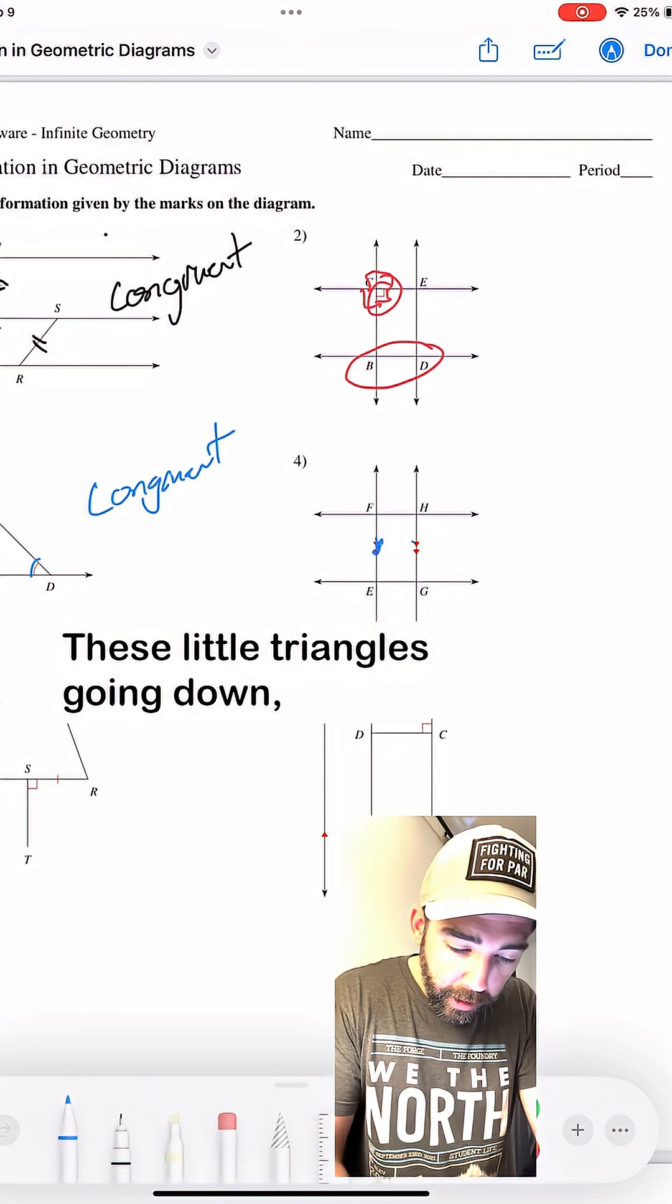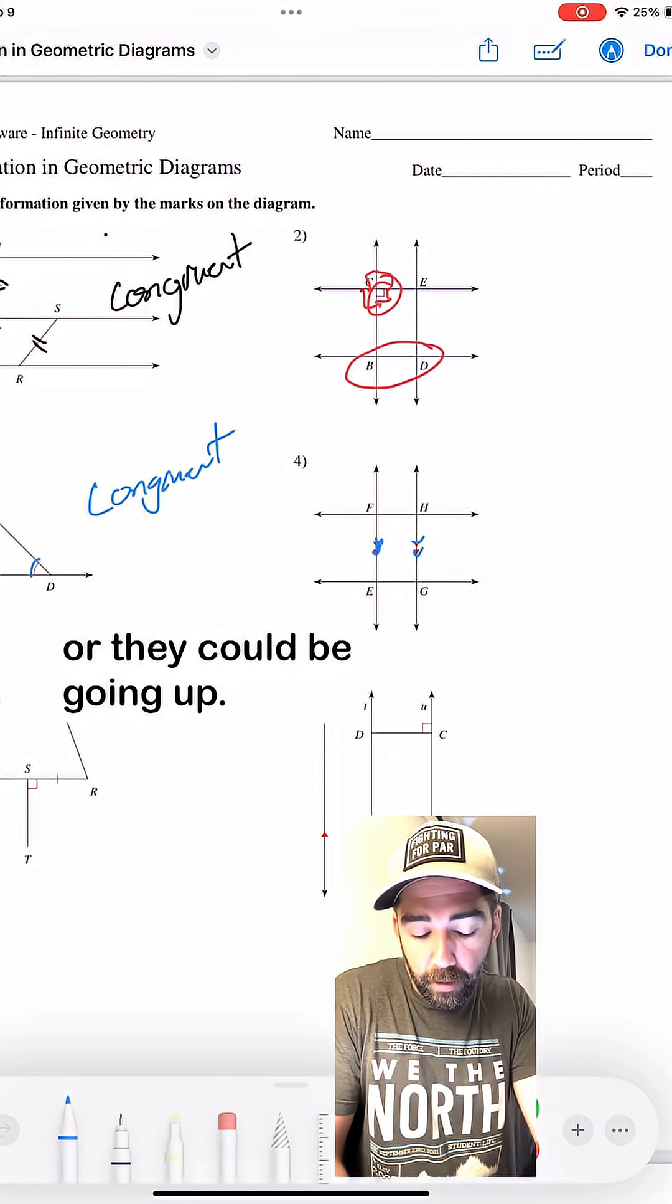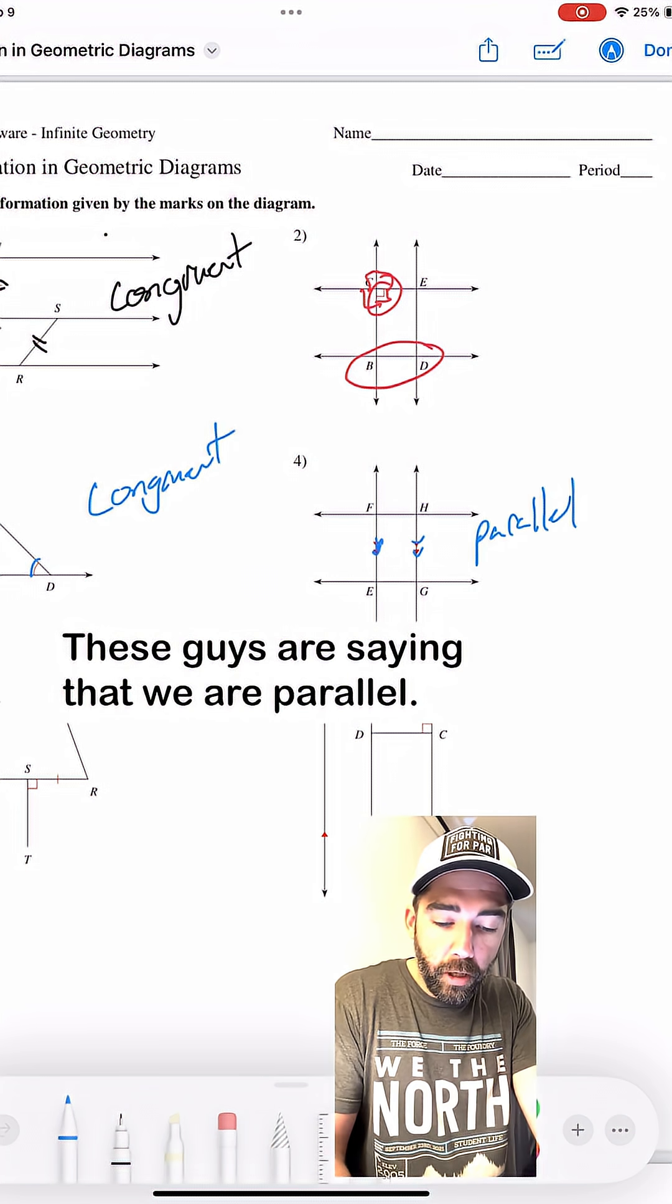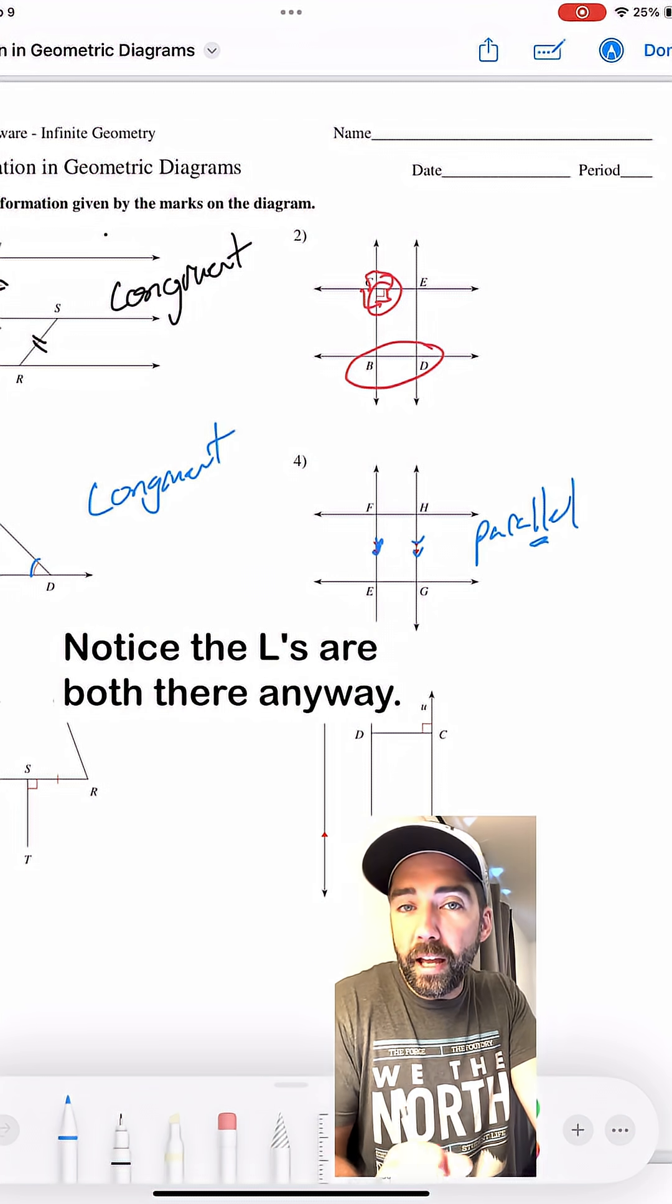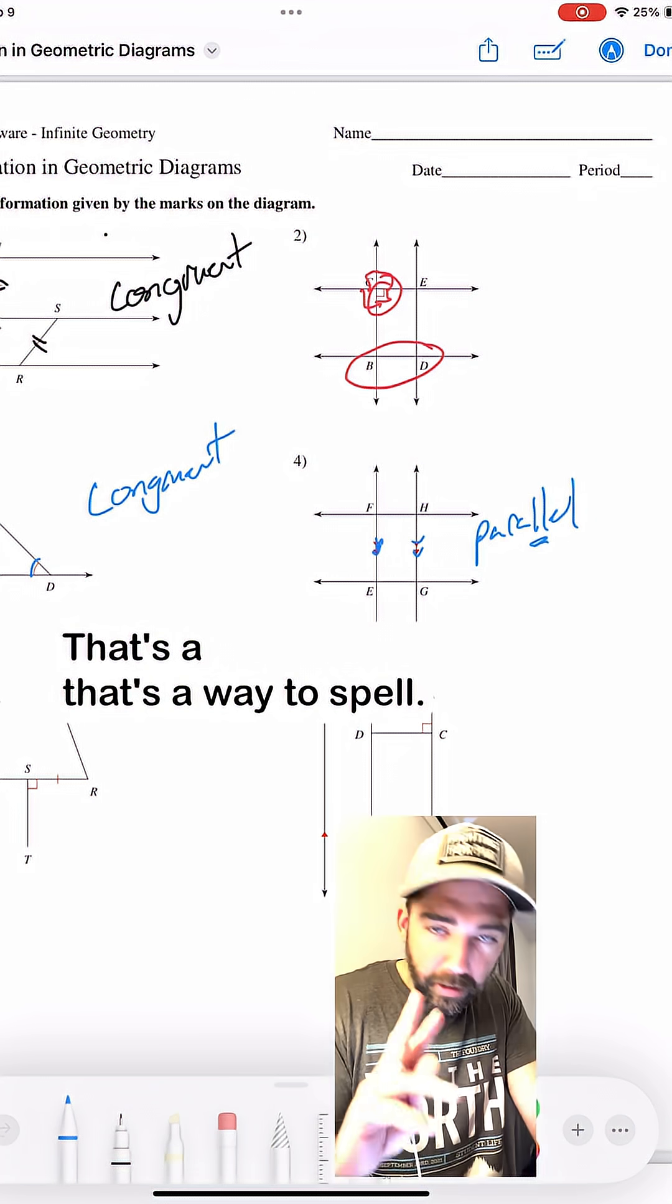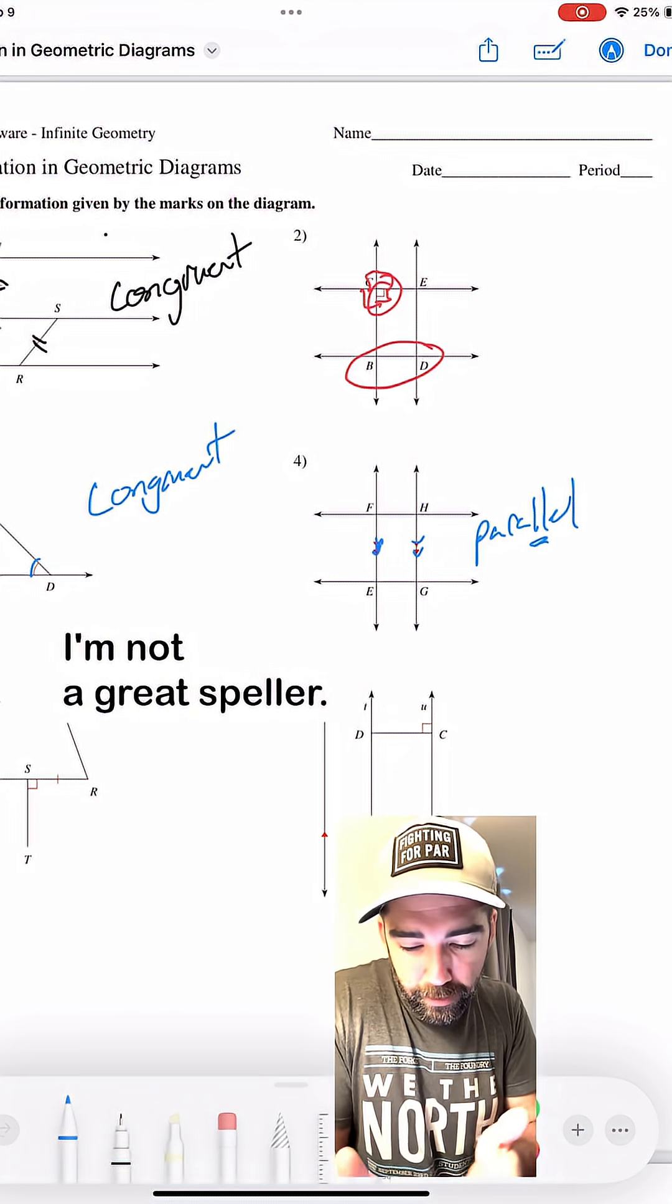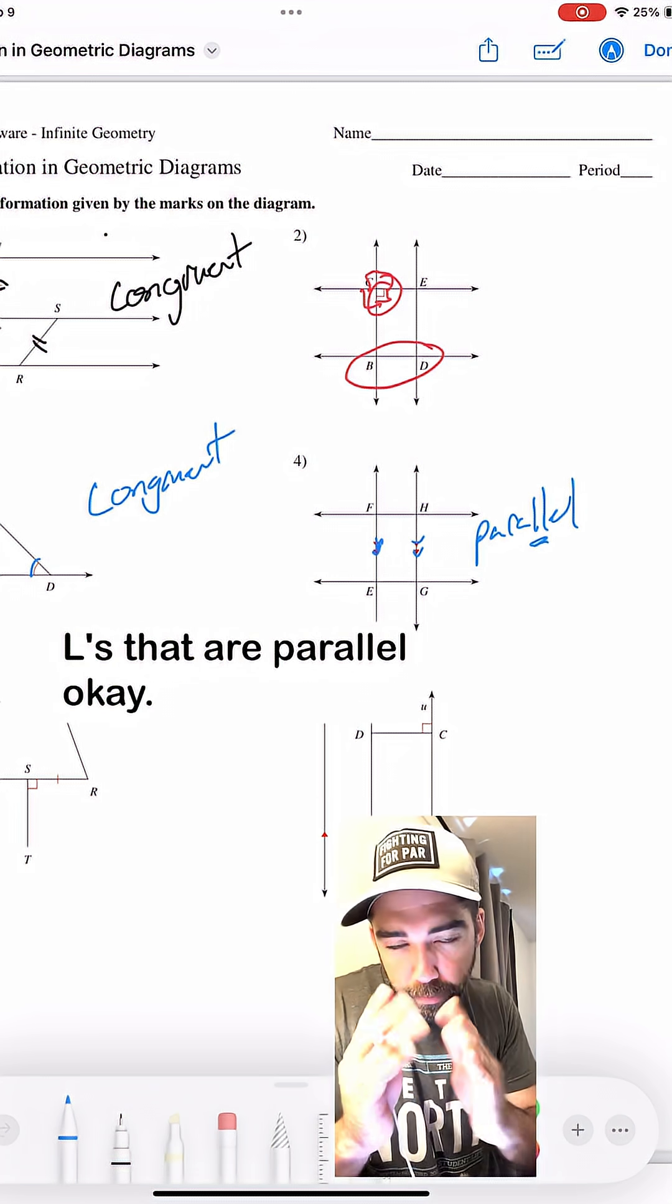These little triangles going down, or they could be going up, these guys are saying that we are parallel. Notice that parallel has two L's. Anyway, that's a way to spell. I'm not a great speller. I know it's parallel because I have two L's that are parallel.